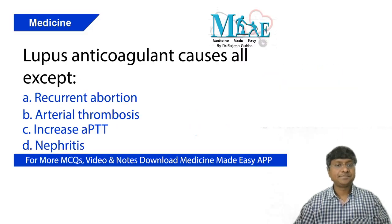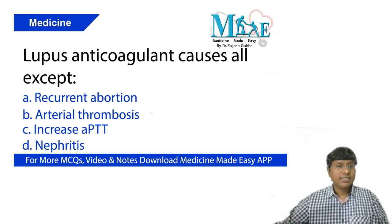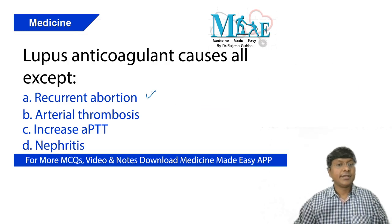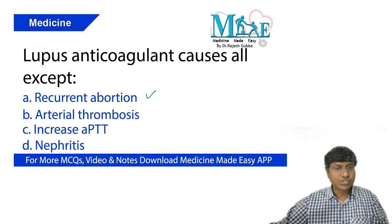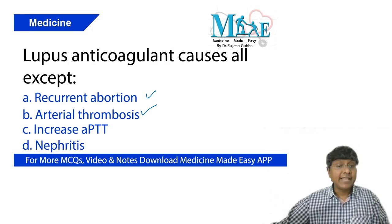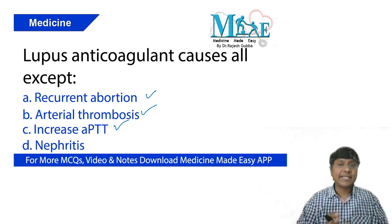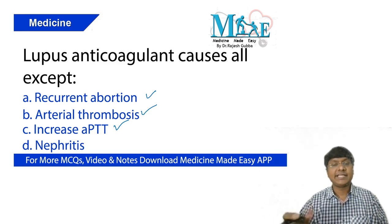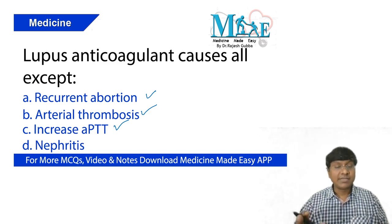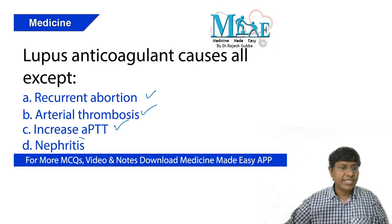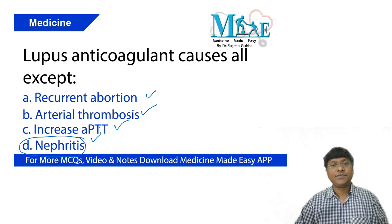Going back to the question — lupus anticoagulant causes all except nephritis. It will cause recurrent abortions, arterial thrombosis, and increased APTT. The increased APTT is because lupus anticoagulant is a pro-coagulant or prothrombotic agent with increasing tendency of thrombus formation. But nephritis is not a part of lupus anticoagulant or APLA syndrome.